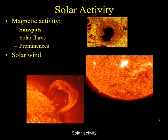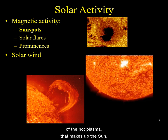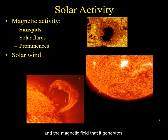Solar activity is the variation of solar output across its surface. You can think of it as local weather variation. It is caused by the complex interaction of the hot plasma that makes up the Sun and the magnetic field that it generates.